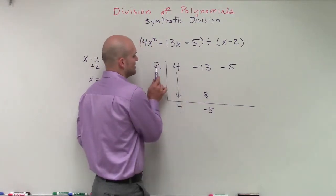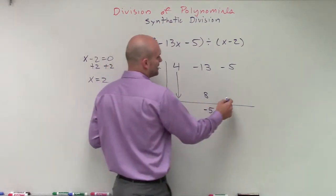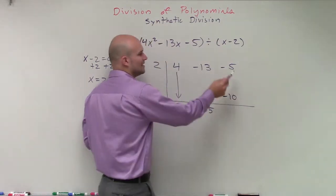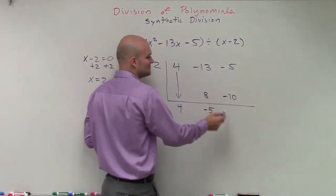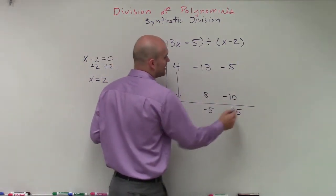Then I take negative 5, and again, multiply it by 2, which gives me a negative 10. Then I do negative 5 plus negative 10, which is going to be a negative 15.